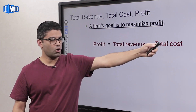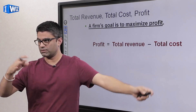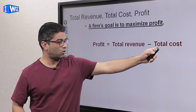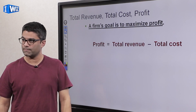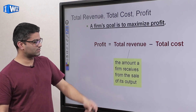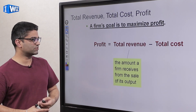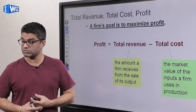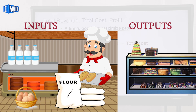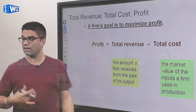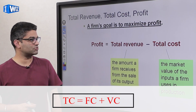Profit is total revenue minus total cost. Total revenue is price times quantity. Total cost is everything we talked about in the previous chapter. The difference between the two gives us the profit a producer earns. Our Baker has to buy ovens and coffee machines, hire labor, get ingredients, and pay for their lease — all of those are costs.